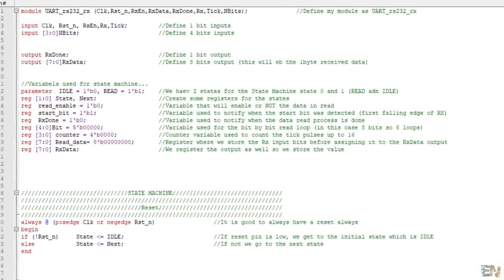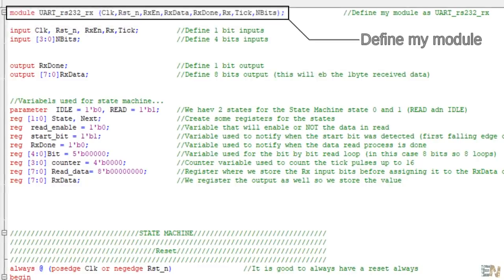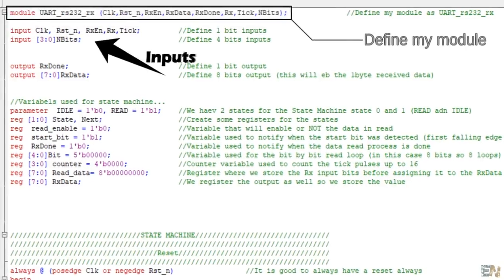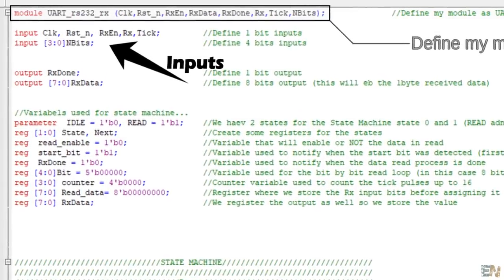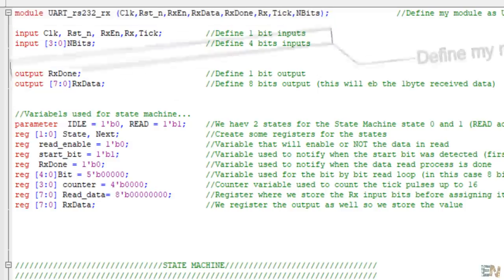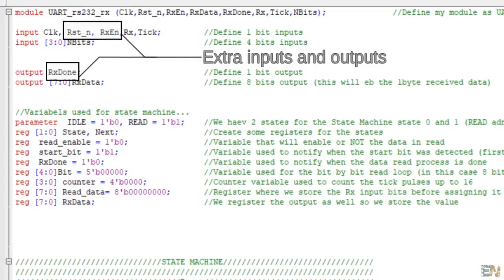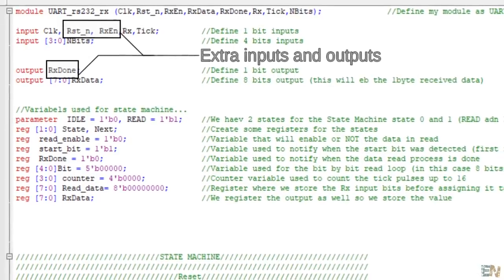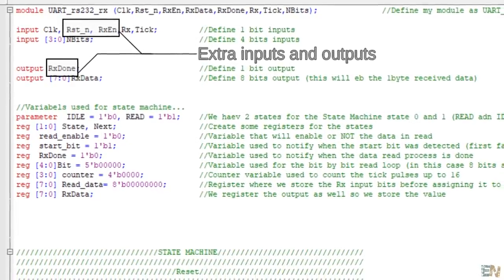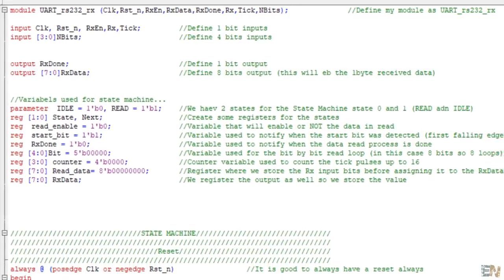Let's start with the RX code. I first define my module as UART_RX. As inputs, I will have the clock signal, a tick pulse input and the RX pin input. We have a few more extra signals for configuration but those are not mandatory such as RX enable, reset, number of bits and an output that will notify when the receive process is done. I define the RX data as an 8-bit output and this will have the final receive value.